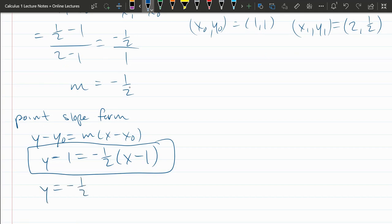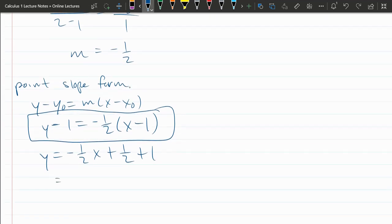If you really like to get mx plus b, the y-intercept form. So I distributed negative 1 half. Negative 1 half times negative 1 is positive 1 half. Added 1 to both sides. 1 half plus 1 is 3 halves. So there's your slope y-intercept form, or mx plus b form.